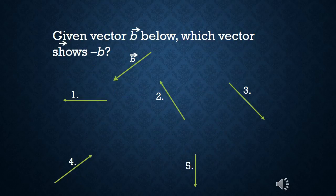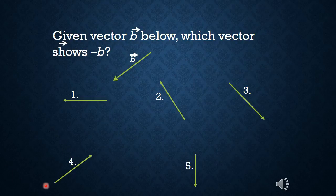Thinking about that: we have vector B shown here, and you want to choose from all the options below — 1, 2, 3, 4, and 5 — which one represents negative B. So if this is B, which of these is negative B?